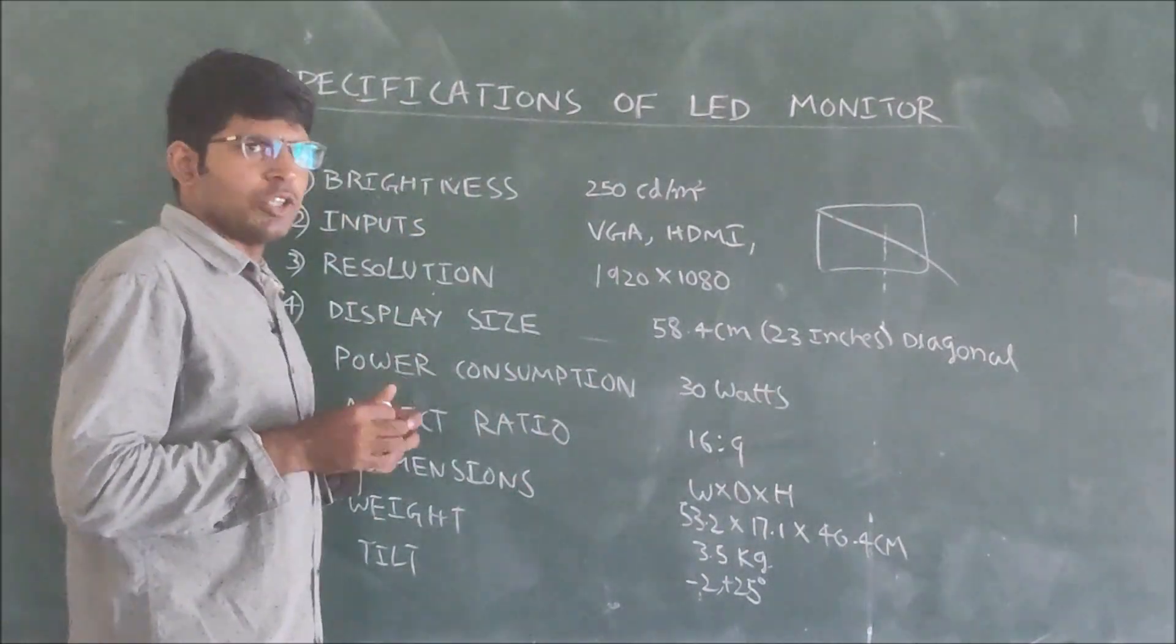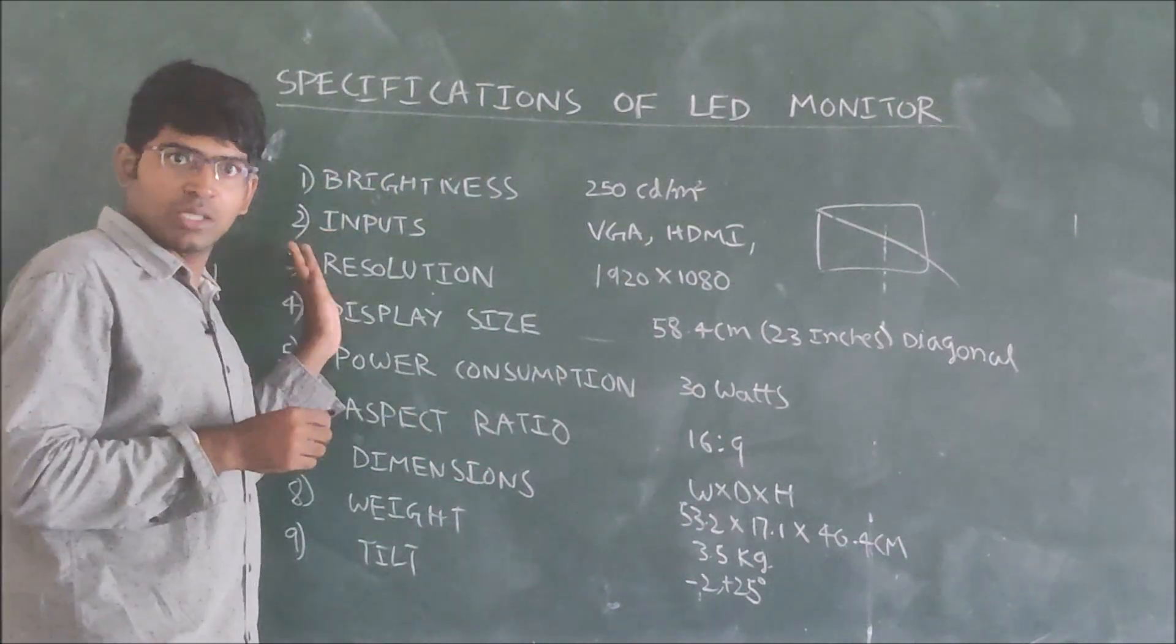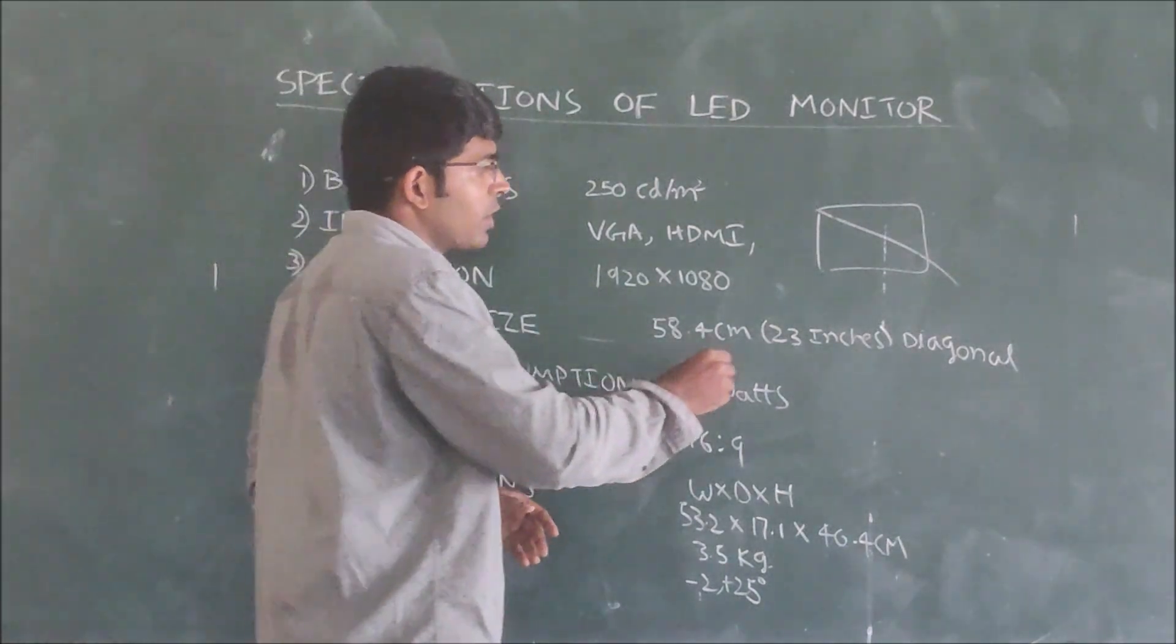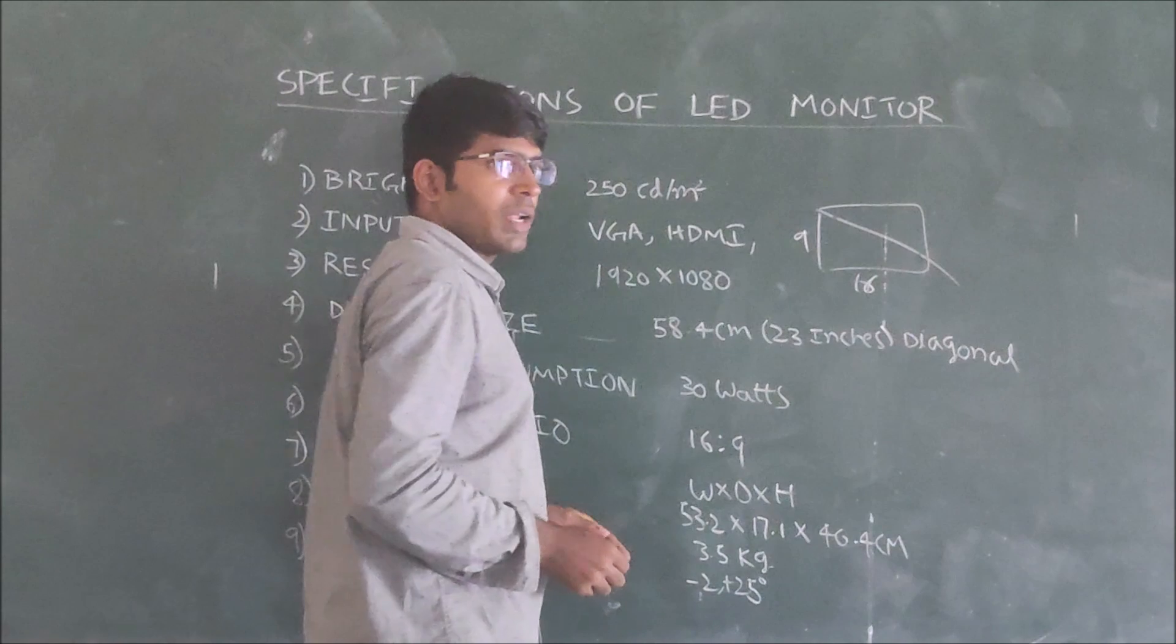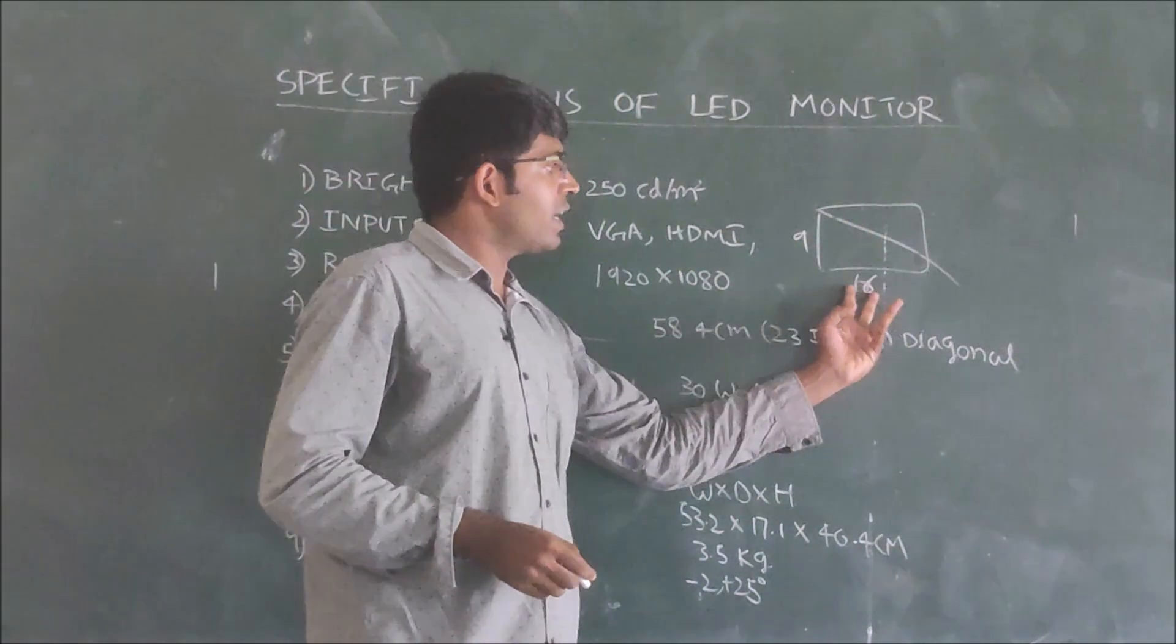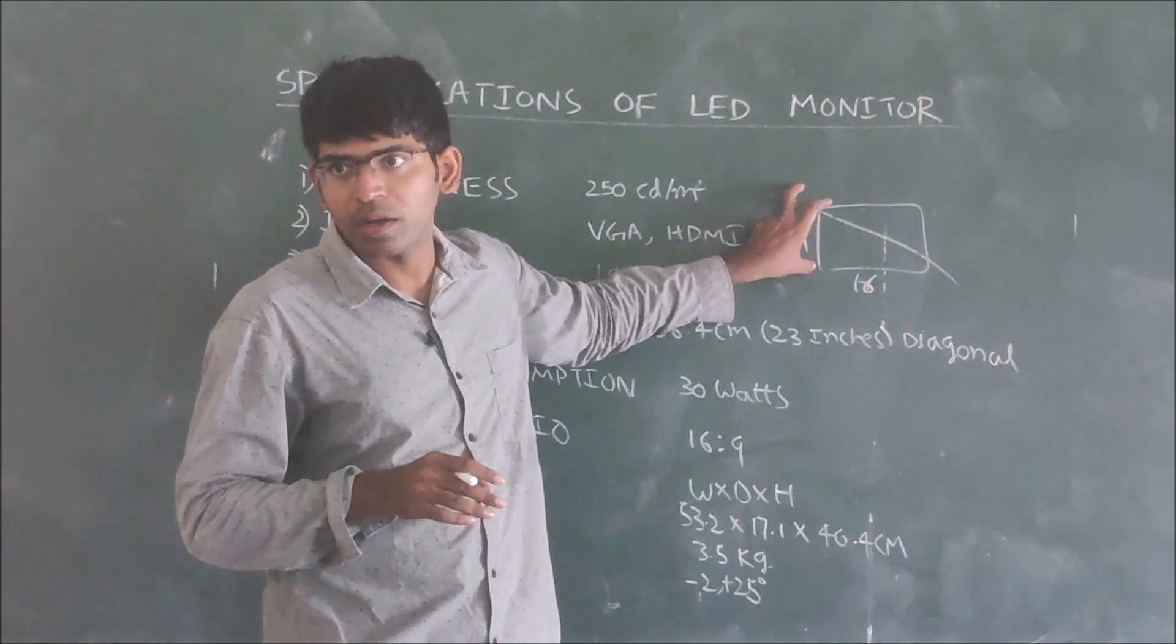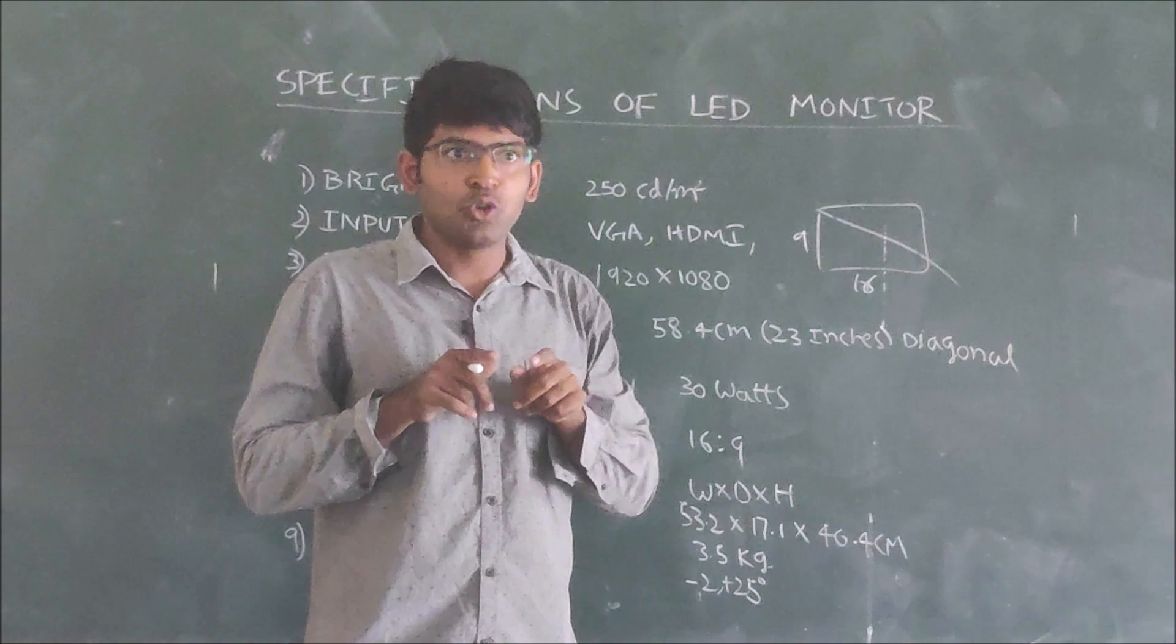And aspect ratio. Aspect ratio means generally we will see this board itself, the aspect ratio is like rectangular. Similarly, in the LED monitor aspect ratio we are saying 16 is to 9. 16 is to 9 means the aspect ratio, the length is more compared to width. If we take a rectangular, generally for human vision...